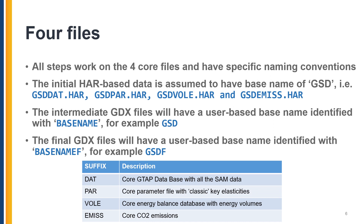We work on all four core files with specific naming conventions. The initial HAR-based data is assumed to have a base name of GSD — so we have GSDDAT, GSDPAR, GSDVOLE, and GSDEMIS. The intermediate GDX files will have a user-specified base name, for example GSD. The new standard GDX files will also have a user base name, referred to as base name F — for example, GSDF for what we're calling the facelifted files. The user needs to specify both the base name for the classic GDX files and the base name F for the standard GDX files.